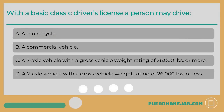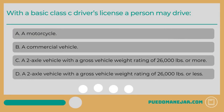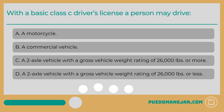With a basic Class C driver's license, a person may drive: A: a motorcycle. B: a commercial vehicle. C: a two-axle vehicle with a gross vehicle weight rating of 26,000 pounds or more. D: a two-axle vehicle with a gross vehicle weight rating of 26,000 pounds or less.